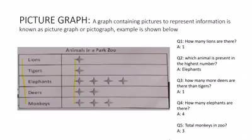Question number one: how many lions are there? The number of lions is one. Question two: which animal is present in the highest number? The number of elephants is four, so elephants are present in the highest number.